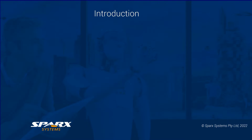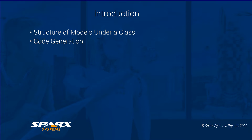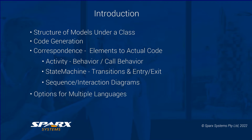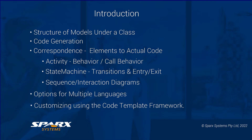We will start with an overview of a class with underlying behavioural models and then generate code in a number of different code languages. What we will cover is: a look at an example and the code generated, a look at the structure from the class down, generating out the code from the model, seeing the correspondence from elements to actual code for activity diagrams, state machine diagrams including transitions, entry and exit do actions, and sequence diagrams. We will then view the options available for different languages and finally look at customising the generation using the code template language.